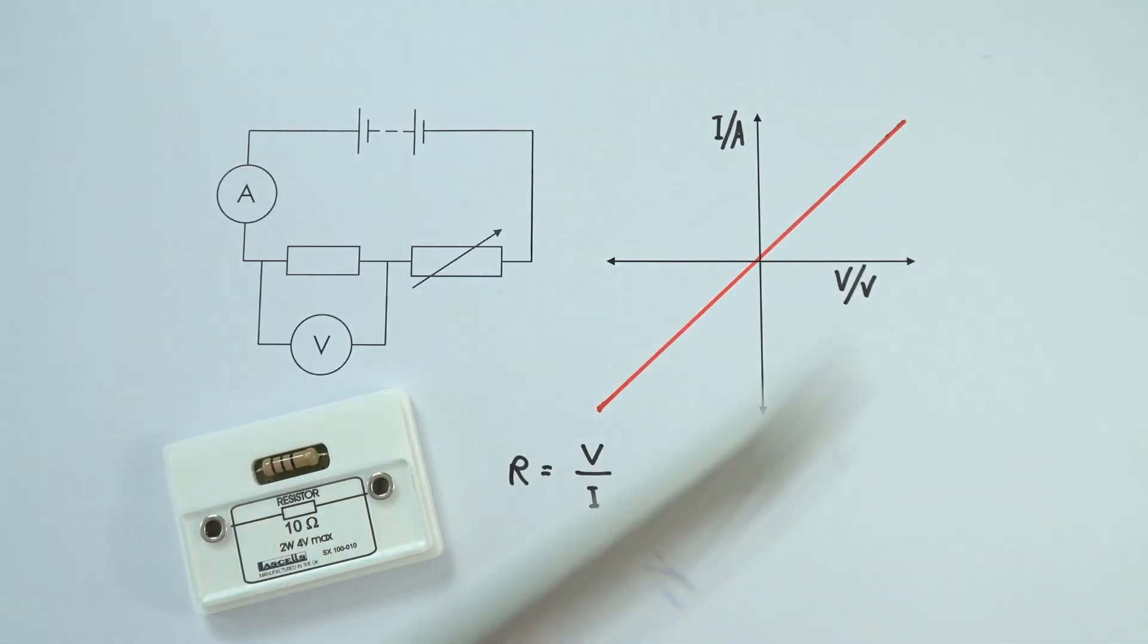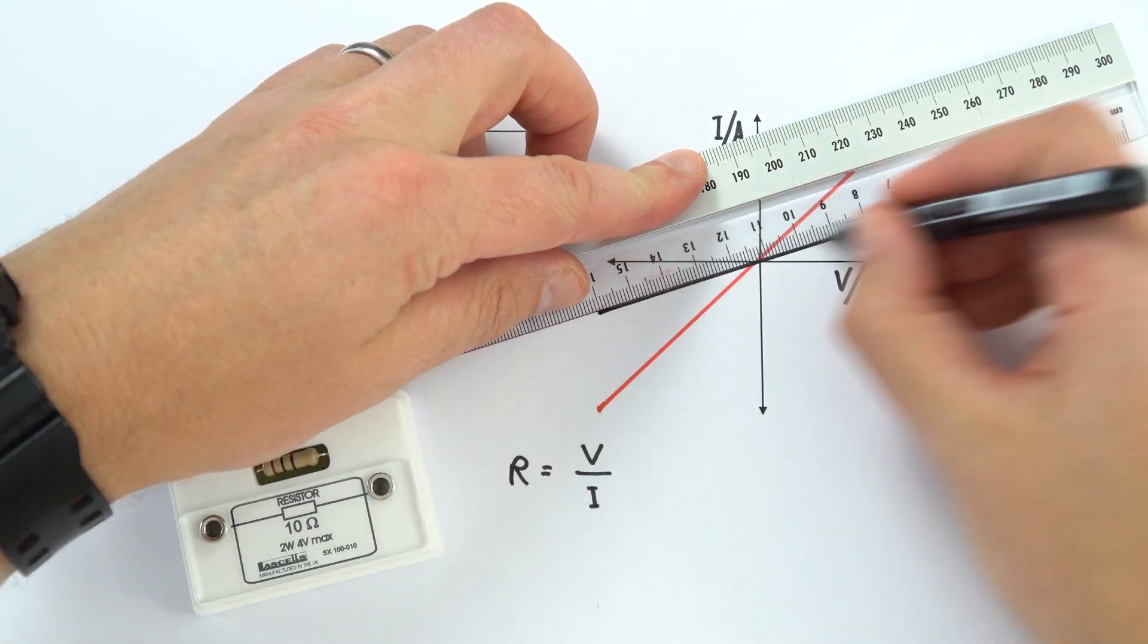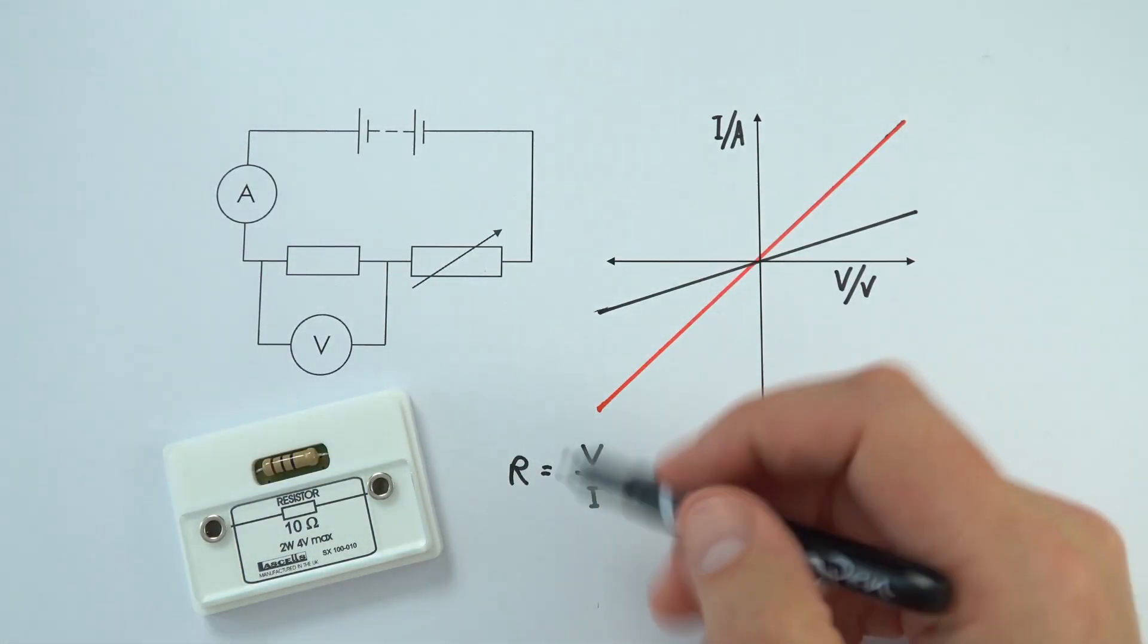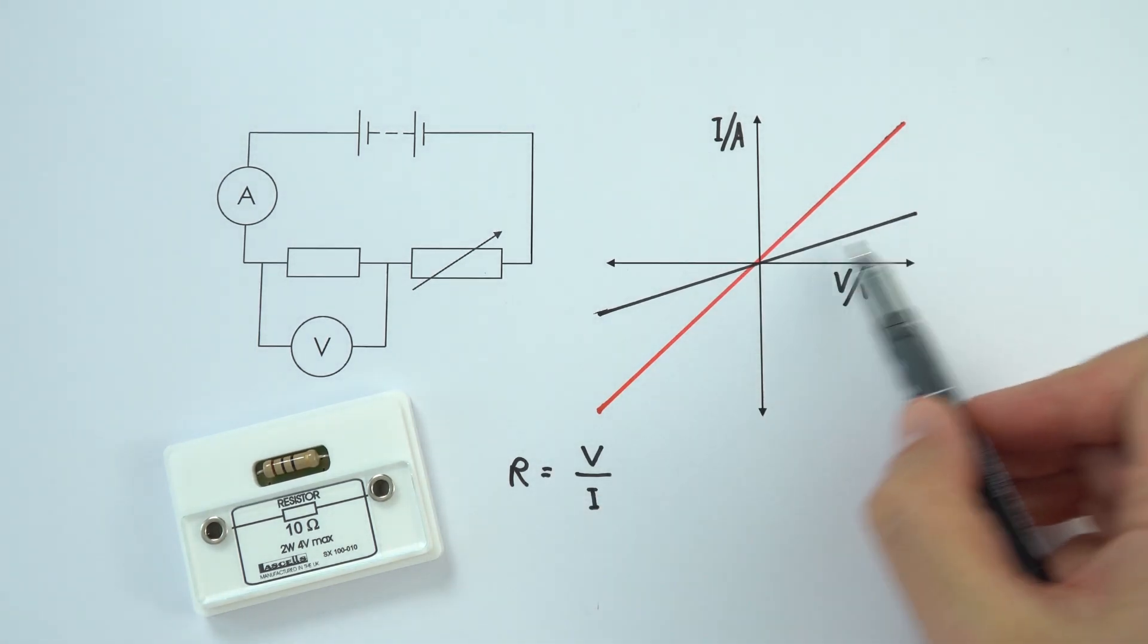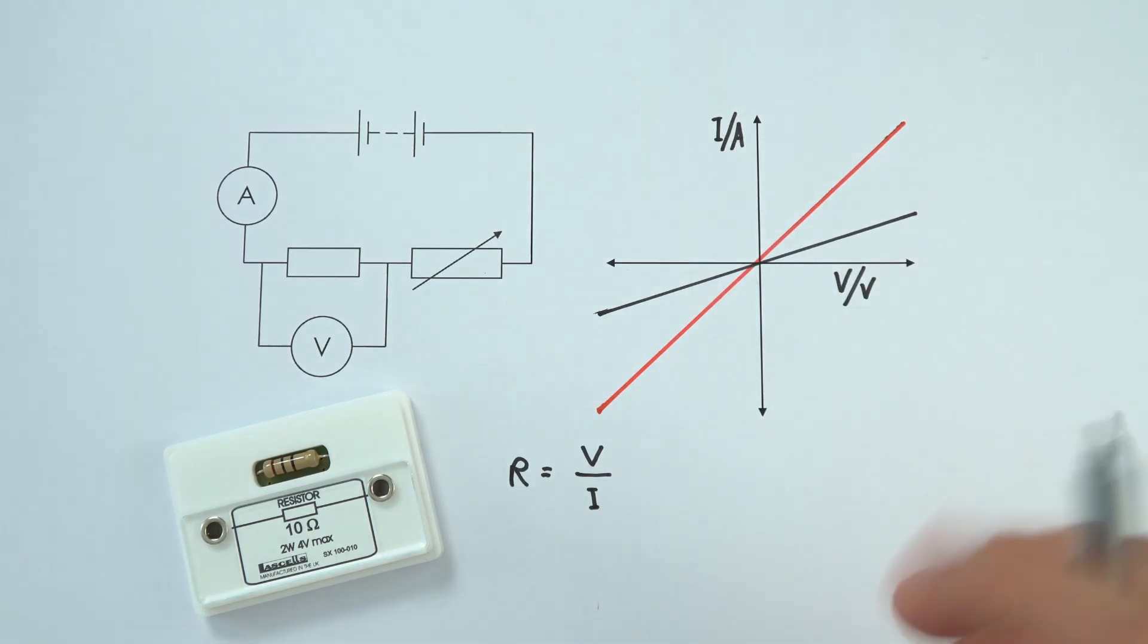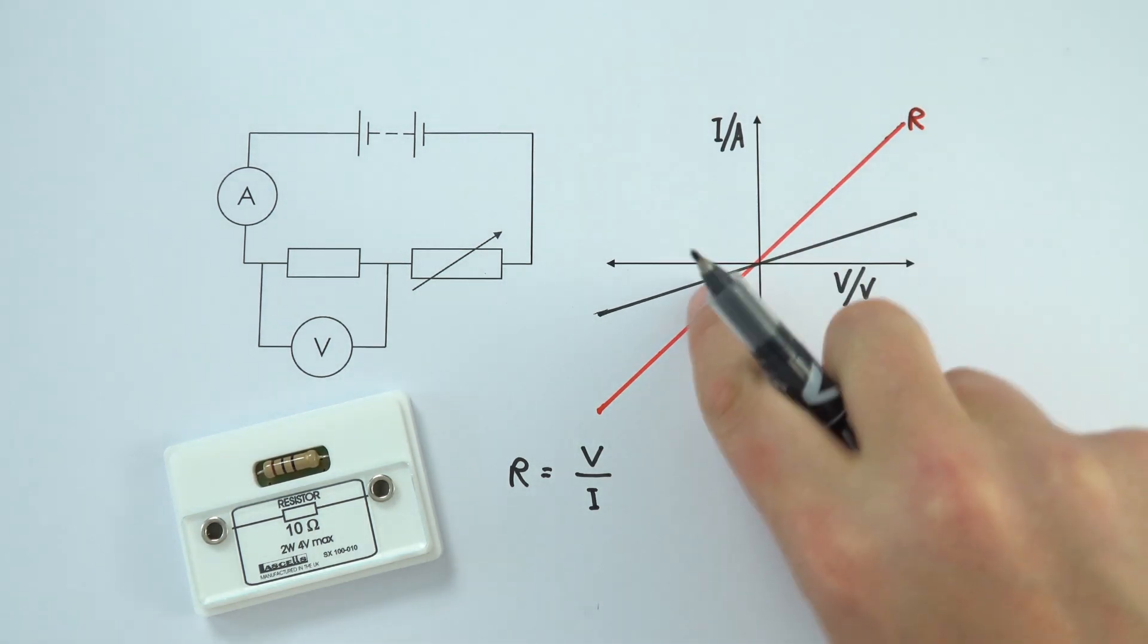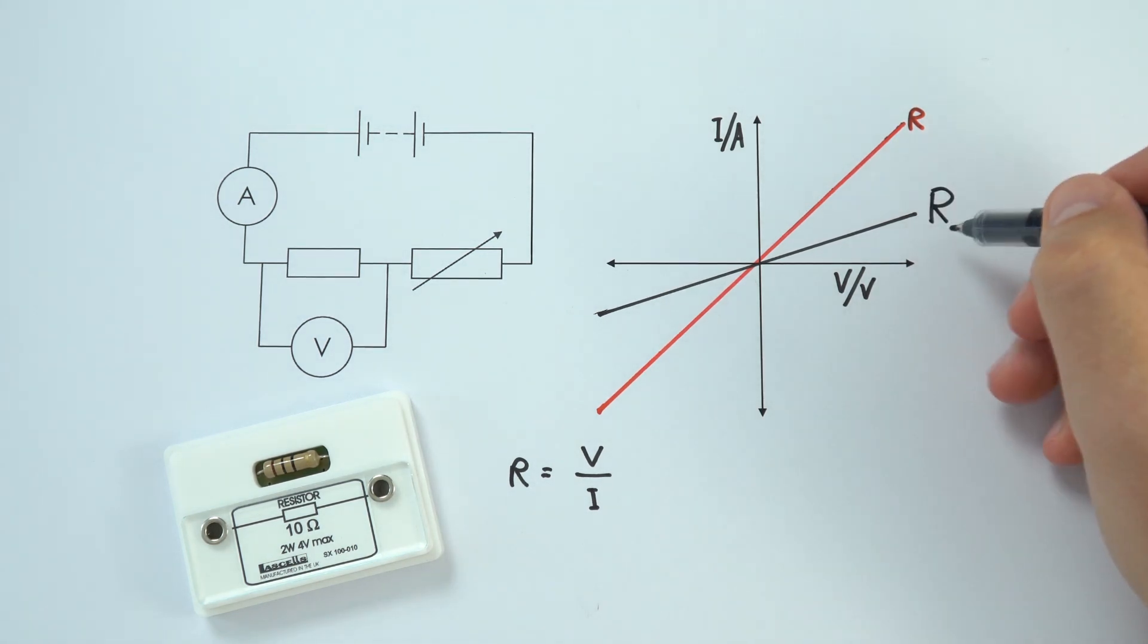If we connect this into the circuit, we might find that we get a very different line of best fit. The resistance equals V divided by I, but the slope of this line equals I divided by V. This means that if this red line was a resistor of value R, because this line has a shallower slope, it's actually got a bigger value of resistance.